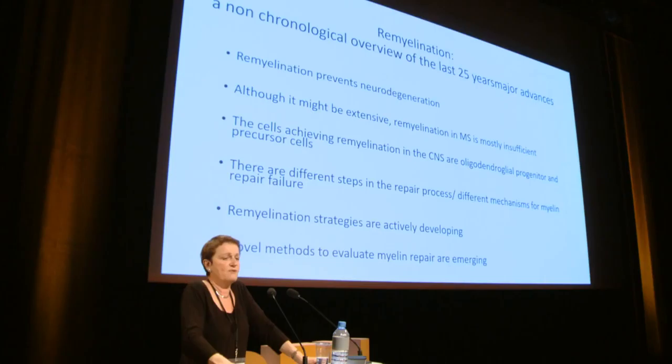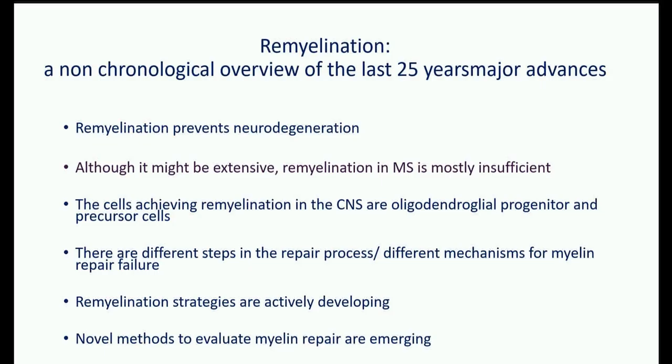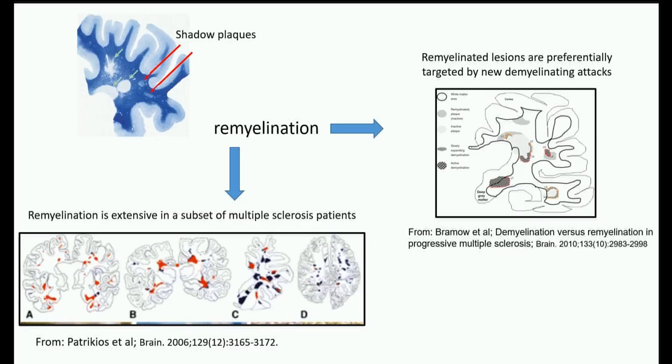An important question not known 20 years ago concerns the nature of the cells achieving remyelination. We now know that both oligodendroglial progenitor cells and oligodendrocyte precursor cells achieve remyelination in the CNS. A key paper also showed that remyelination prevents neurodegeneration — and this is critical because neurodegeneration paves the way for disability progression.